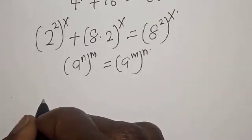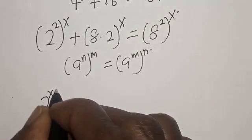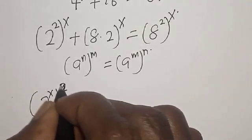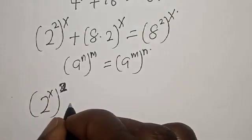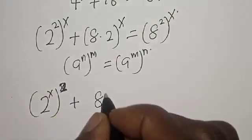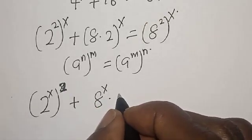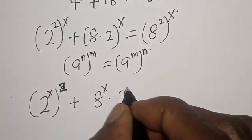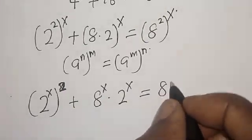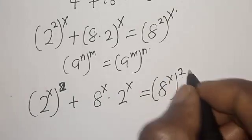Now 2 raised to power s, all squared, plus 8 raised to power x is equal to 8 raised to power s, all squared.